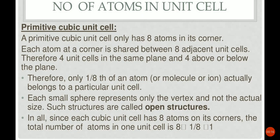First we will discuss the primitive cubic unit cell, also known as the cubic unit cell or primitive unit cell. In a primitive unit cell, it has only 8 atoms at its corners. Only particles are present at the corners — that is known as a primitive unit cell.